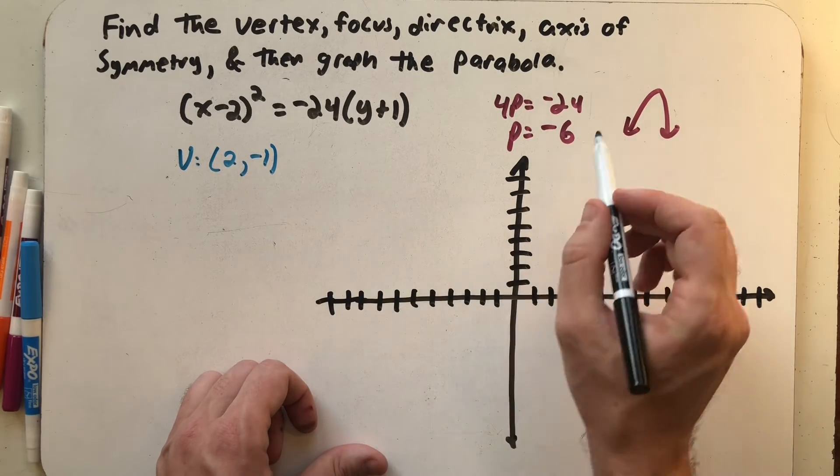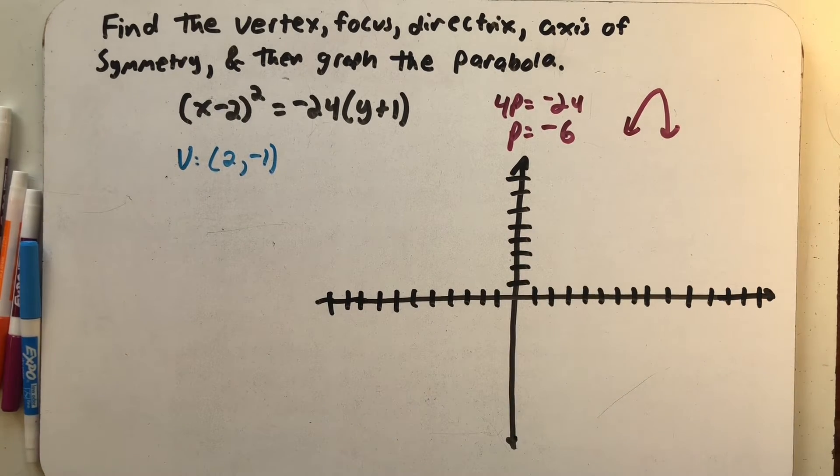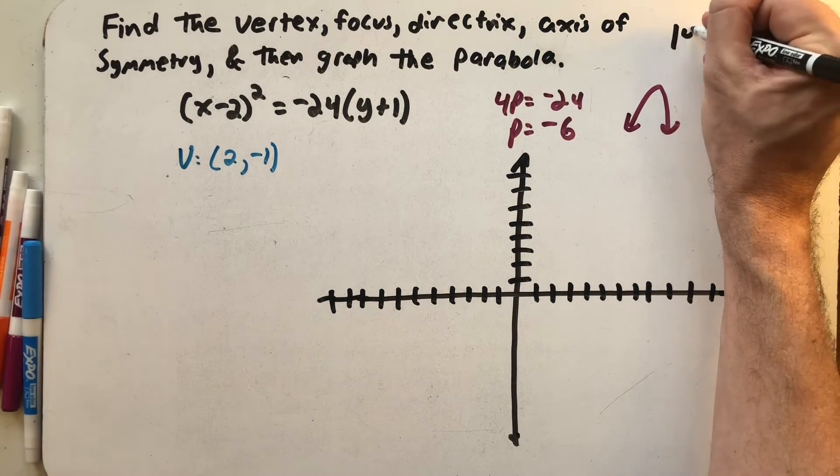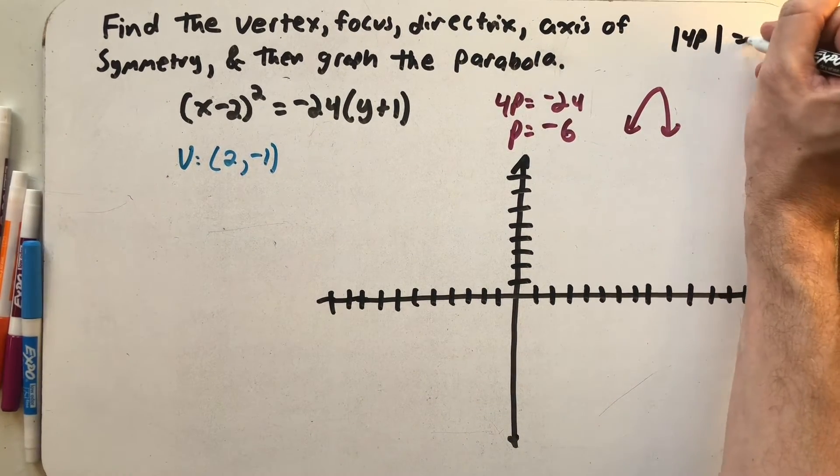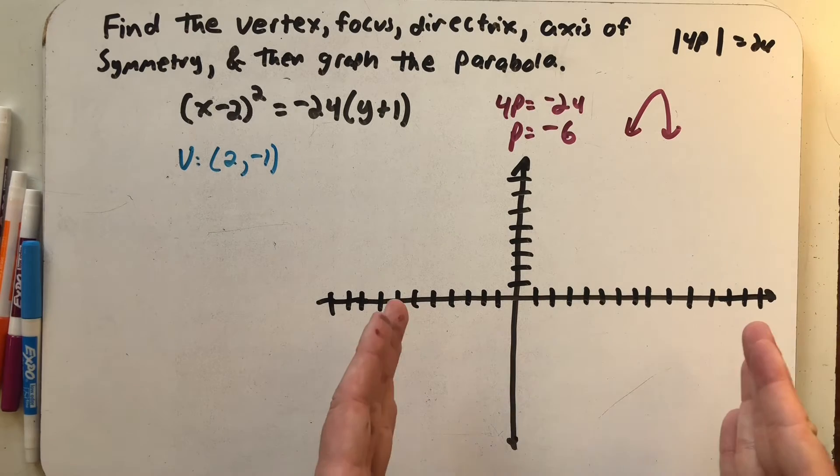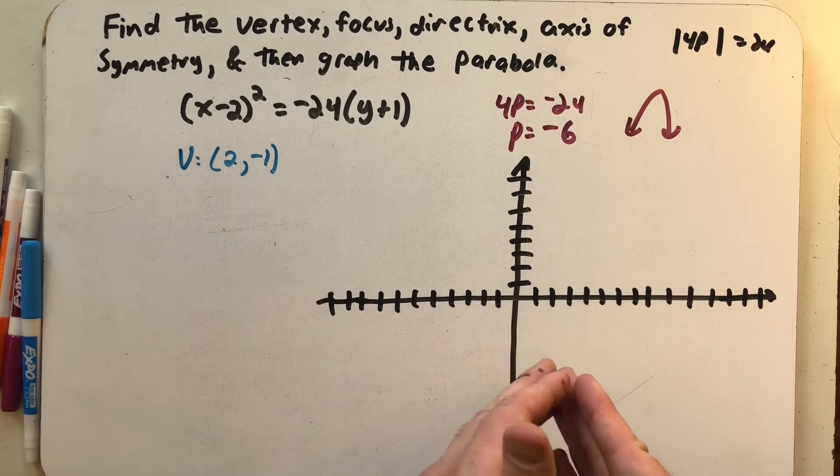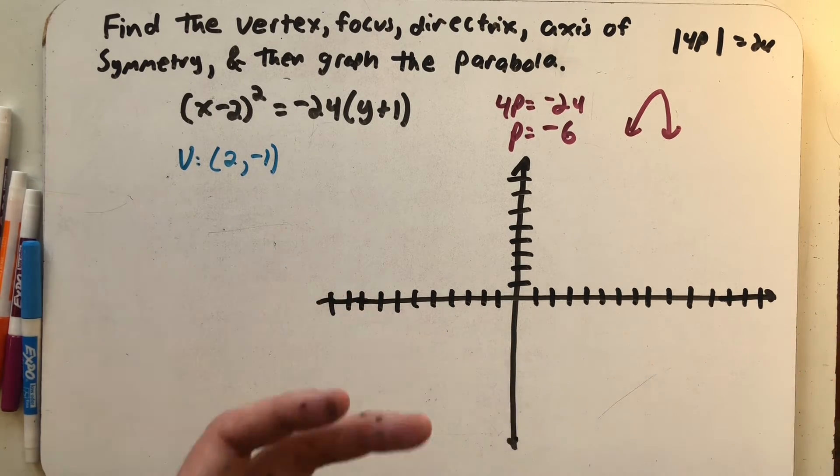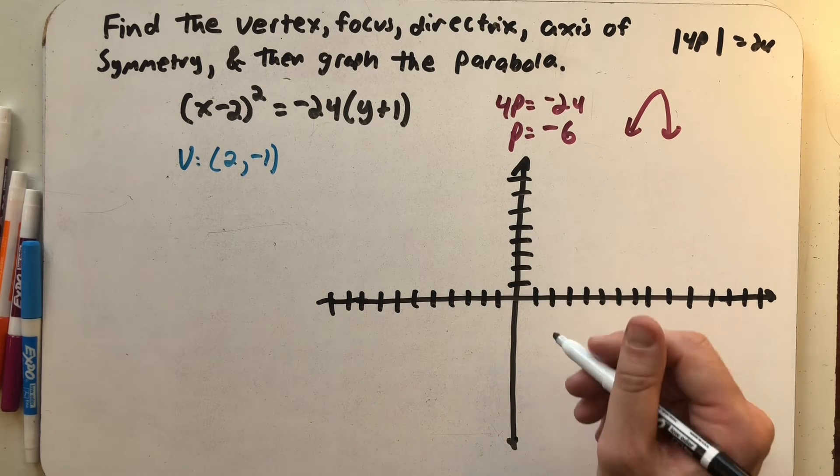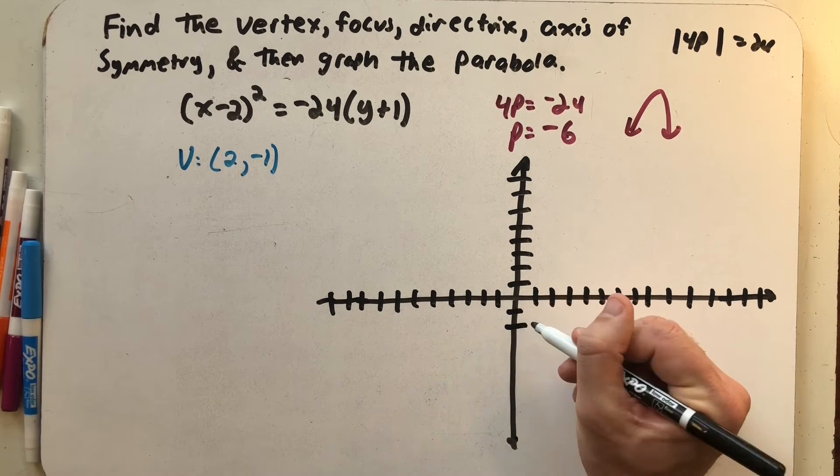And secretly in my head I'm thinking about that focal diameter. The absolute value of 4p is 24. So from side to side on my parabola around the vertex I'll have 24 total units. I'll go to the left 12 and to the right 12. So I'm already thinking about needing quite a few tick marks here.